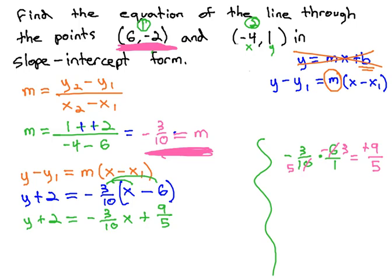Finally, to get the y alone, we just have to subtract 2 from both sides. This will give us y equals negative 3 tenths x, minus 1 fifth.